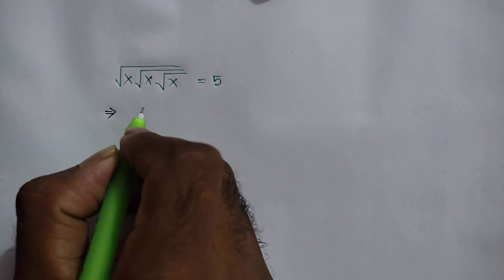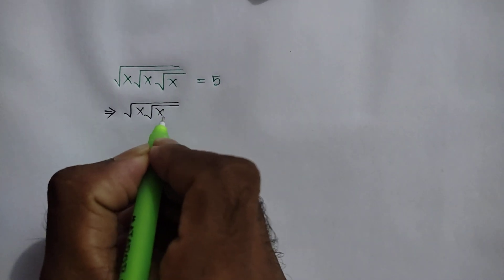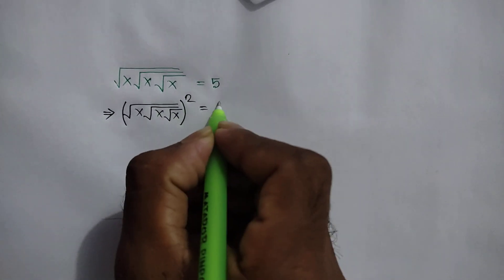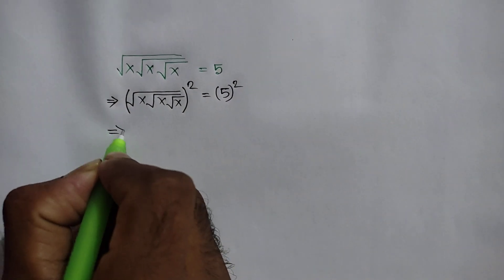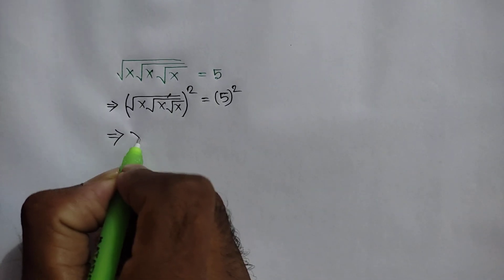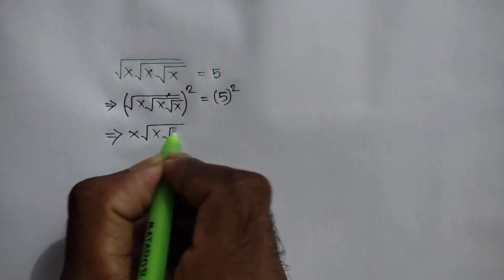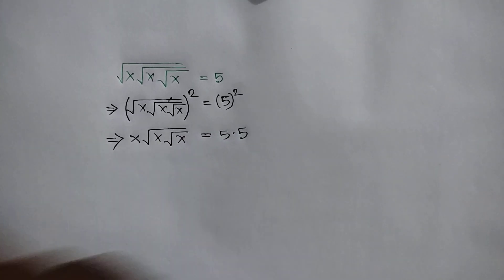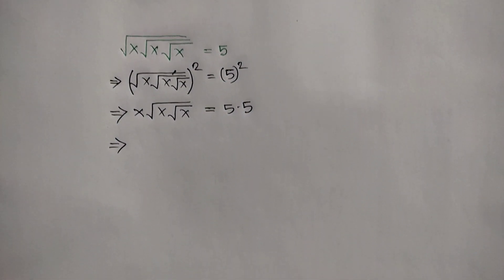Squaring both sides we can write: square root of x times square root of x times square root of x, whole squared, is equal to 5 squared. This square cancels out the square root, so we can write x times square root of x times square root of x is equal to 5 times 5.